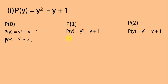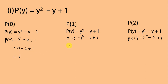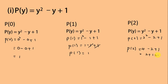For p(0): 0² - 0 + 1 = 0 - 0 + 1 = 1. For p(1): we replace y with 1 — 1² - 1 + 1 = 1 - 1 + 1 = 1. For p(2): we replace y with 2 — 2² - 2 + 1 = 4 - 2 + 1 = 3. So the first part is completed.